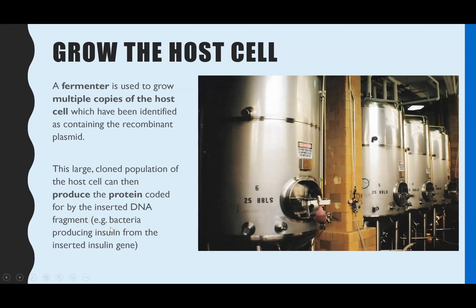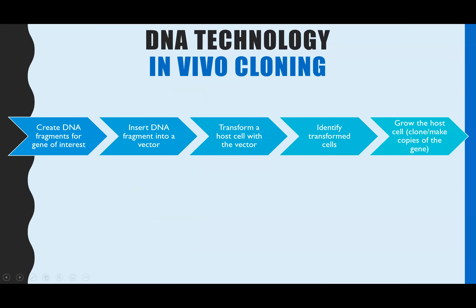One common example is that the gene for insulin might have been the gene inserted into your plasmid, which then goes into your bacteria. We then grow lots of that bacteria in the fermenter and those bacteria will produce lots of the insulin protein from that gene. So that's why we call it in vivo cloning - we have cloned that piece of DNA in a living organism; that's what in vivo means.